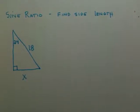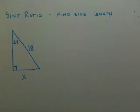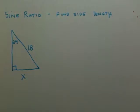This video deals with the sine ratio. We want to solve for X and find the side length of the triangle where the hypotenuse is 18 and we're given an angle of 24 degrees.